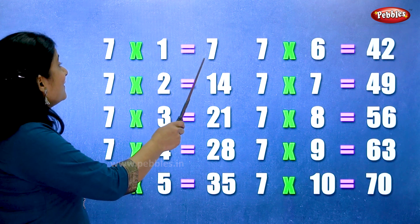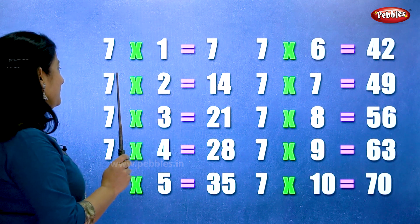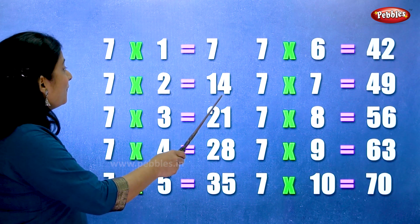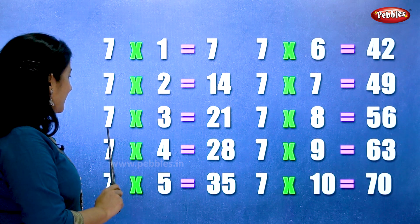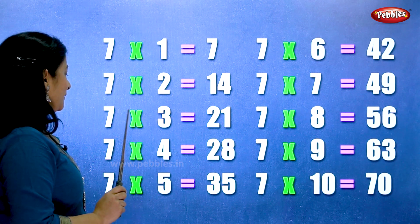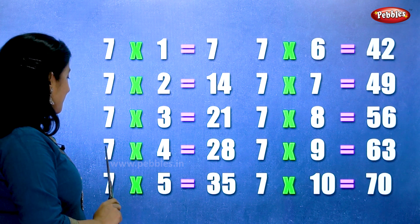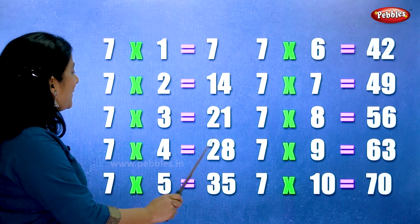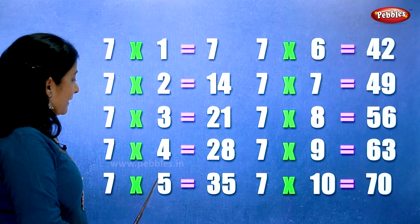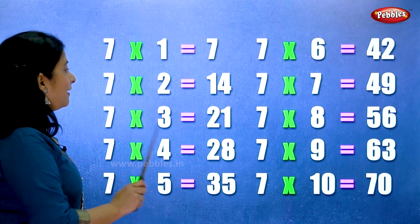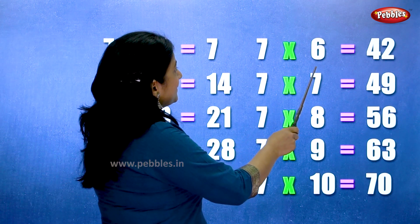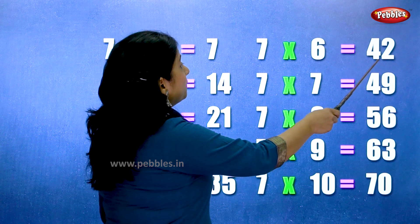7 ones are 7. 7 twos are 14. 7 threes are 21. 7 fours are 28. 7 fives are 35. 7 sixes are 42.